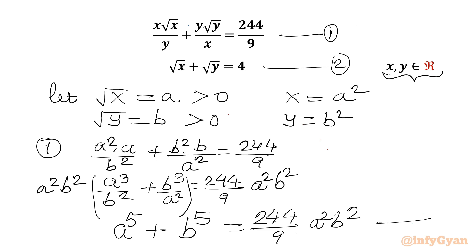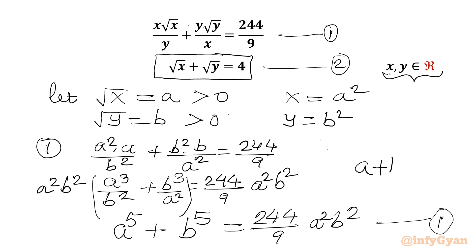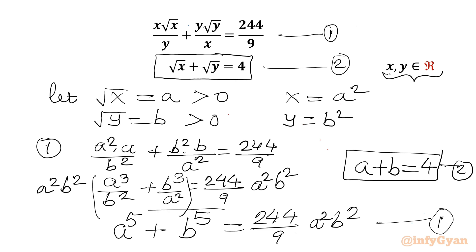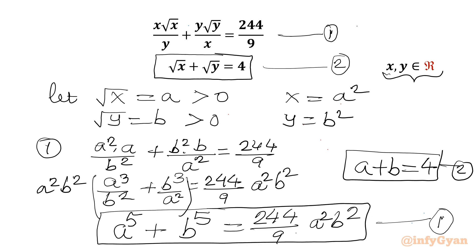This transformed expression is our new equation 1. After substitution, the second equation becomes a + b = 4. So our new system to solve is: a⁵ + b⁵ = (244/9)a²b² and a + b = 4.